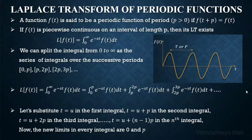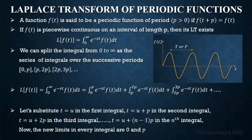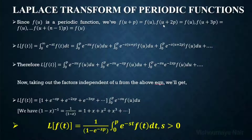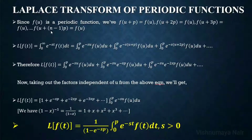Likewise, in all the other integrals the limit will also get converted to 0 to p. Now we have converted the function in terms of the variable u. Since f of u is a periodic function, we know that f of u plus p equals f of u, f of u plus 2p equals f of u, f of u plus 3p equals f of u, and similarly f of u plus (n minus 1)p also equals f of u.